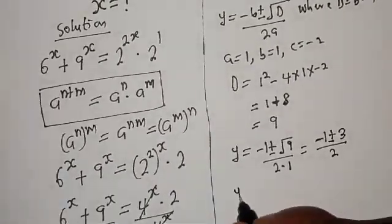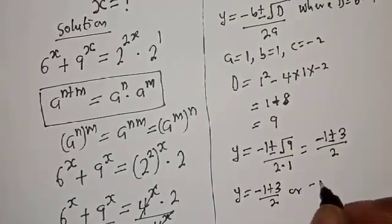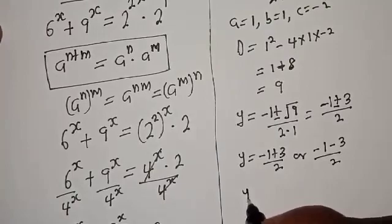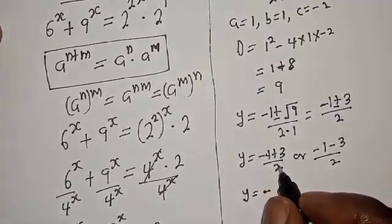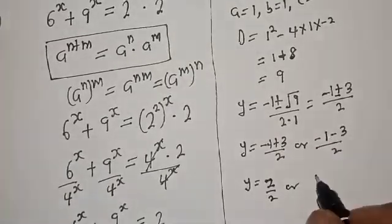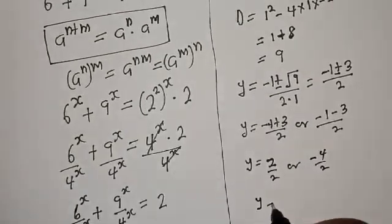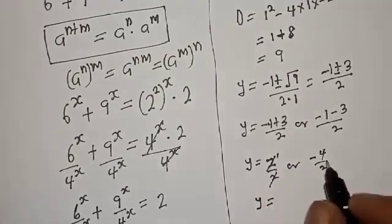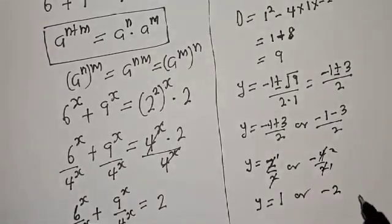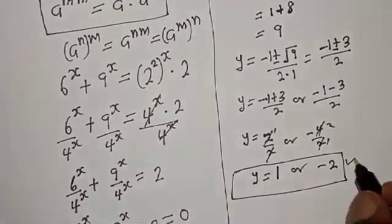Then y equals minus 1 plus 3 over 2, or minus 1 minus 3 over 2. This gives y equals 1 or y equals minus 2. These are the values of y using the quadratic general formula.